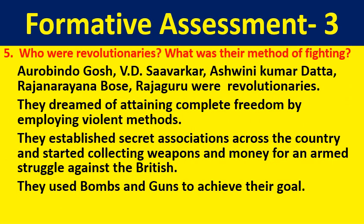Who were the revolutionaries and what were their methods of fighting? Aurobindo Ghosh, V.D. Savarkar, Ashwini Kumar Datta, Rajnarayan Bose, Rajguru, Bhagat Singh, and Chandrashekhar Azad were the revolutionaries. They dreamed of attaining complete freedom by employing violent methods. They established secret associations across the country and started collecting weapons and money for an armed struggle against the British. They used bombs and guns to achieve their goal.